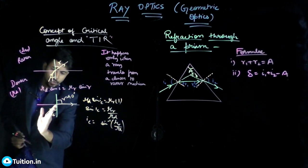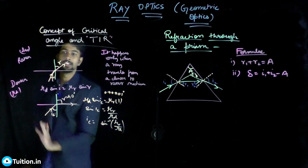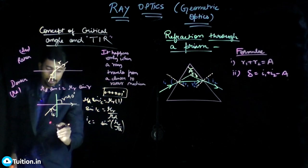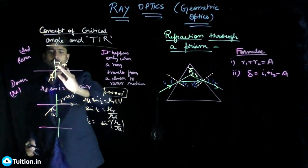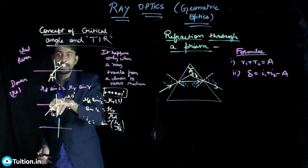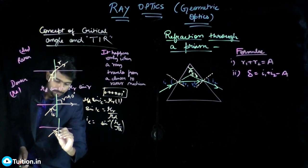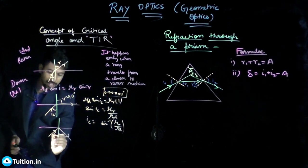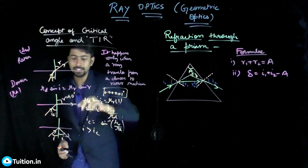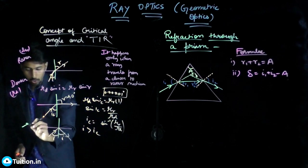If you slightly increase your angle even a tiny bit beyond the critical angle, the ray does not gradually continue refracting. Instead, it gets completely reflected. As i increased from 0 to ic, r increased from 0 to 90°. But once i exceeds ic — even by 0.001° — the ray gets reflected and obeys the laws of reflection. This phenomena is called total internal reflection.